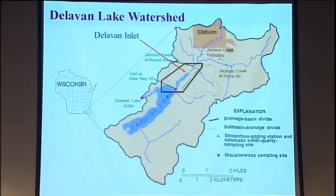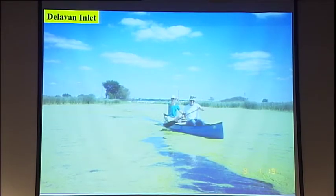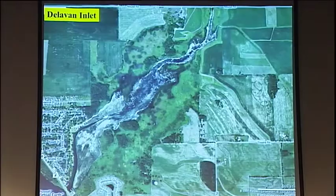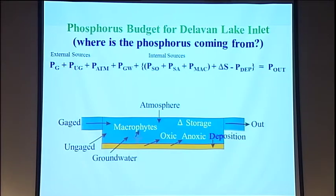The next thing we wanted to do was look a little bit downstream at the inlet coming into the lake. Before we started, this was a really muddy system because the carp were turning it all up. After we got rid of the carp, all of a sudden the weeds started to grow — a lot of things happened and the system really changed. An aerial photo shows the weeds were just across it. So we wanted to do a really detailed study to find out what was happening in that inlet, looking at all the external sources coming in — gauged area, ungauged area, groundwater, atmosphere — and also how much was coming from the macrophytes, how much was coming out of the bottom, and how much was being deposited.